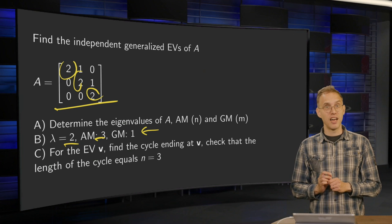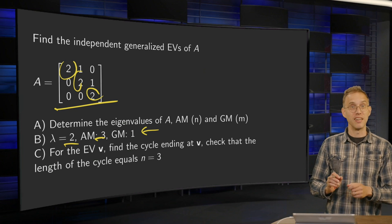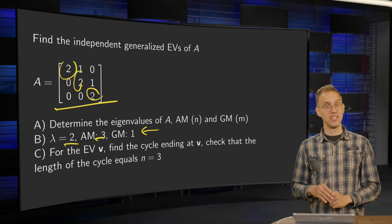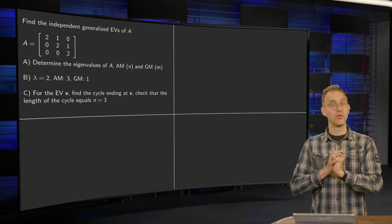Now, for this eigenvector V, because it will be only one independent eigenvector, we will have to find the cycle ending at this V. And we'll have to check that the length is indeed equals to 3. So that's the program. Let's do the program.